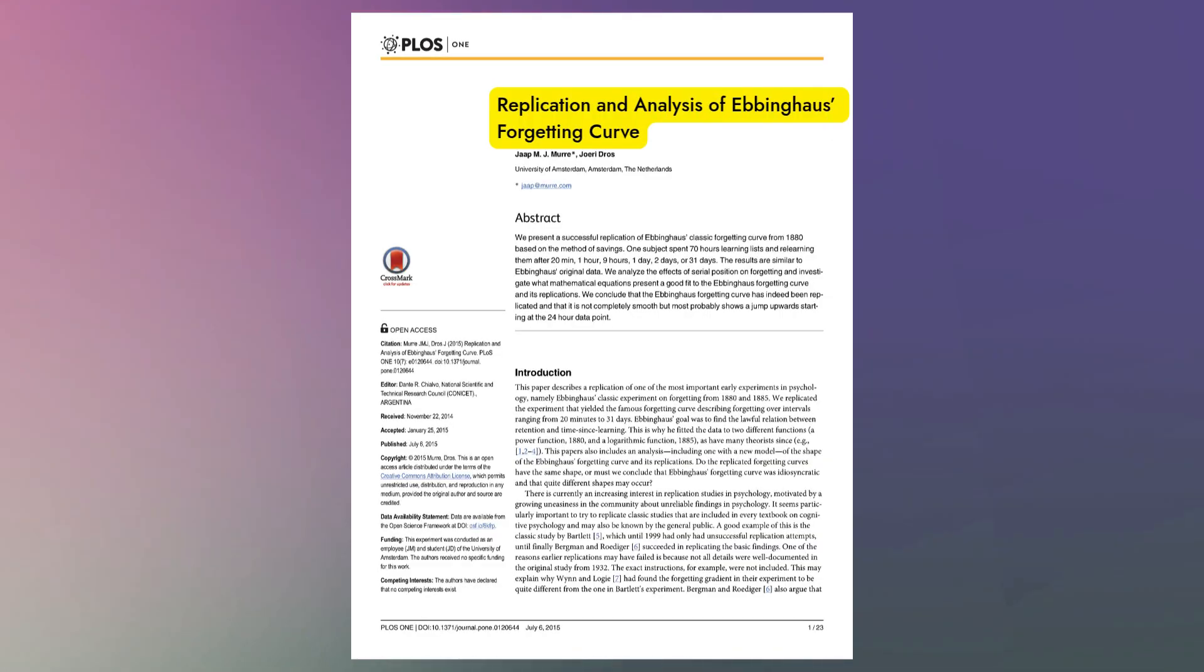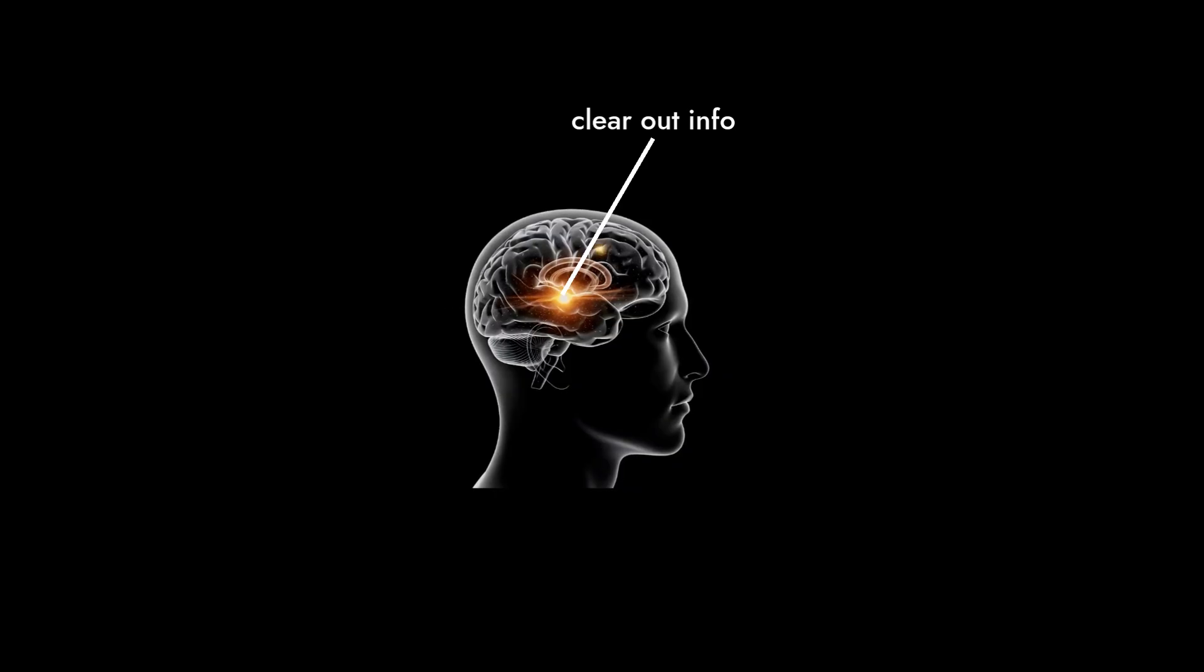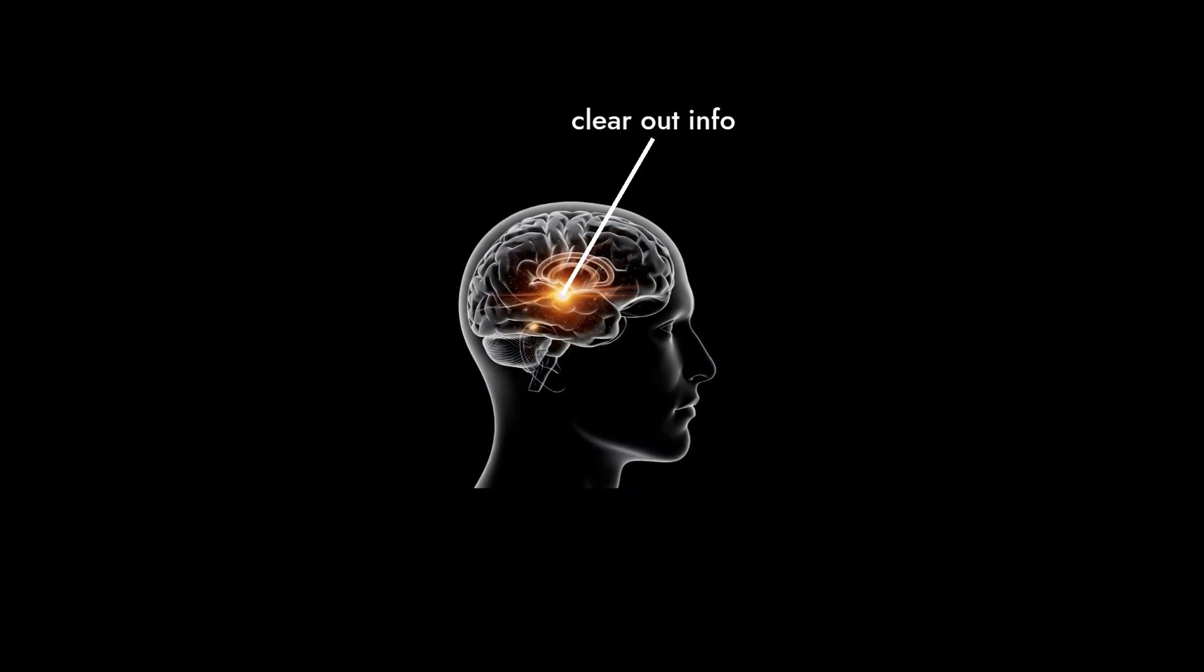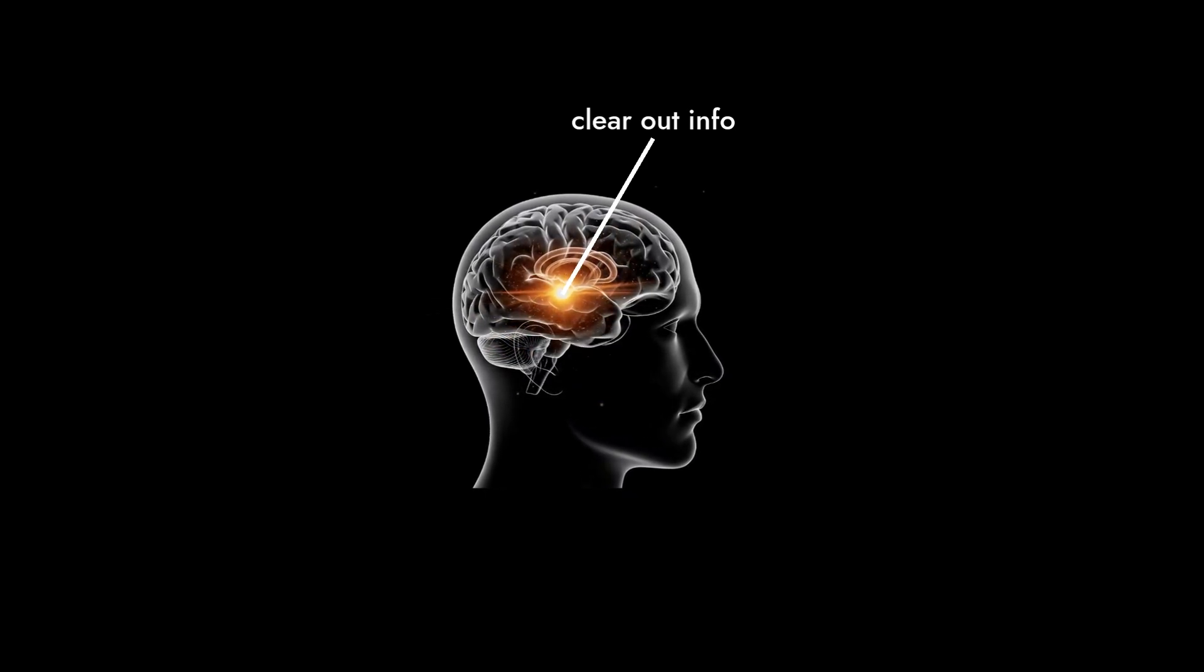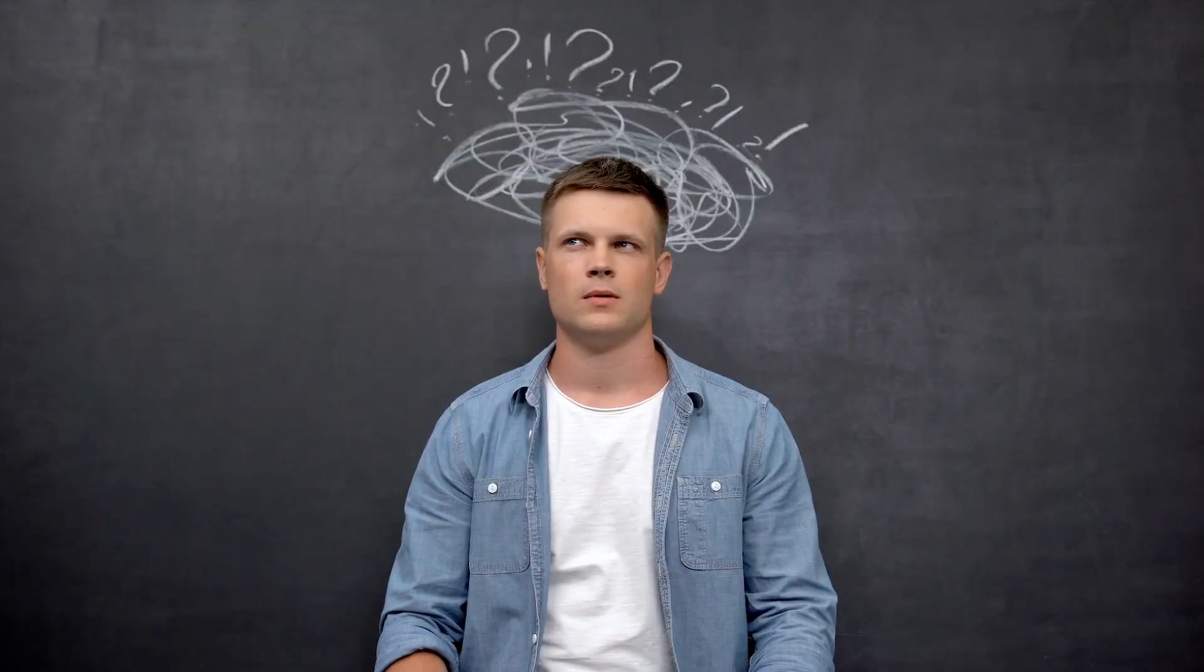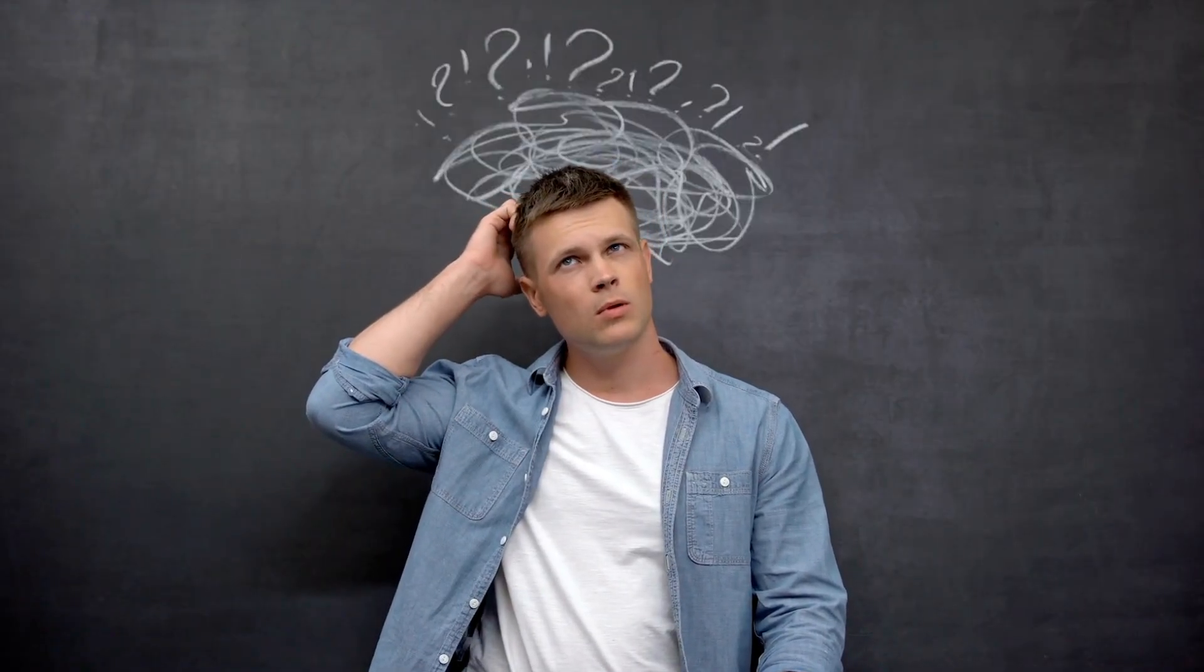Here's why. Our brains are efficient. If information doesn't seem important, the brain clears it out to make space for what matters. That's why cramming the night before feels like it works, but the knowledge fades fast.